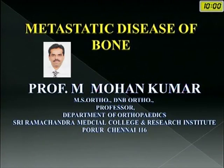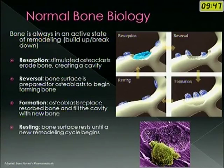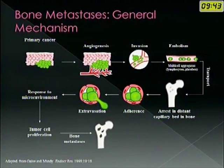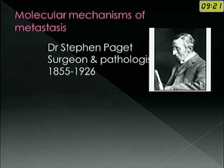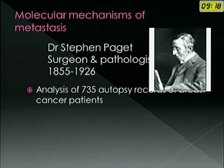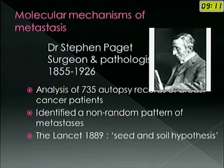I am going to give you a brief overview of the metastatic disease of the bone. As you know, bone is an active tissue where there is resorption, reversal, formation and resting phase of bone remodeling. How does bone metastasis take place? The primary cancer, because of angiogenesis, invades the tissues, embolizes and gets arrested in the proximal part of the long bones or in the cancellous area. The tumor cell proliferates and slowly causes destruction of the local area. The first description of metastasis was by Dr. Paget of Paget's disease, who published his report in Lancet in 1889 — the seed and soil hypothesis.